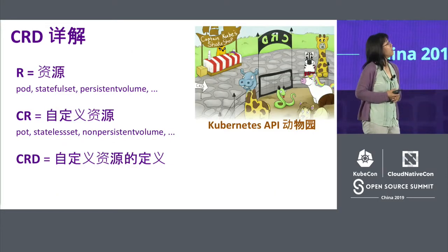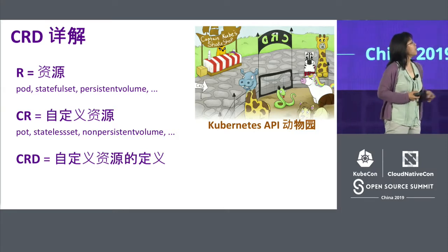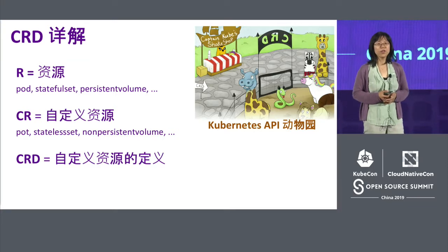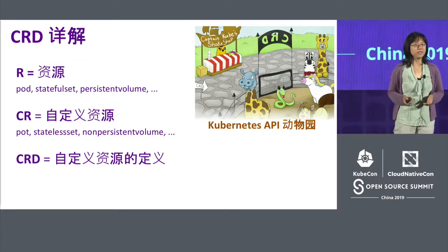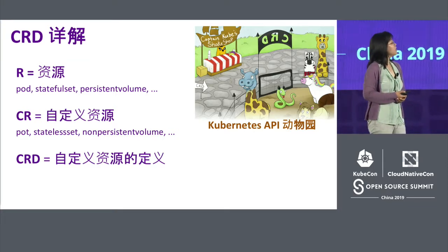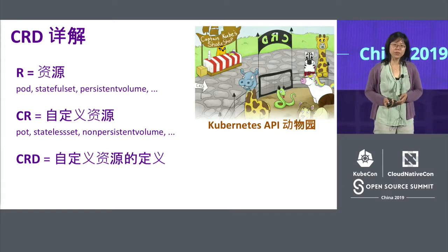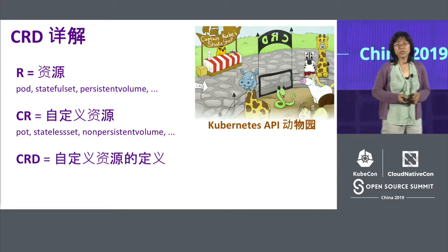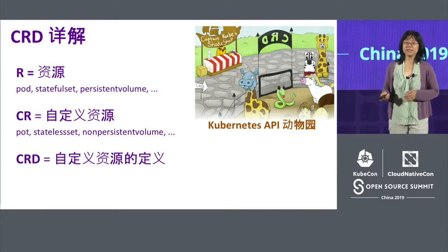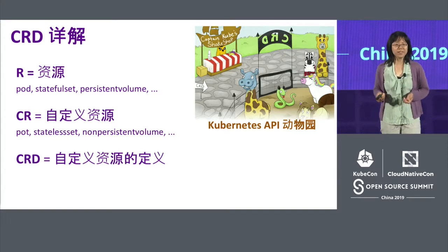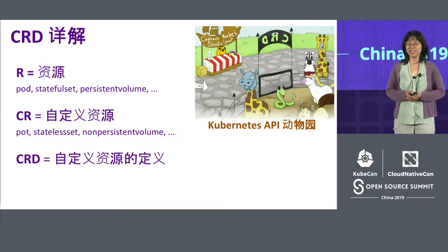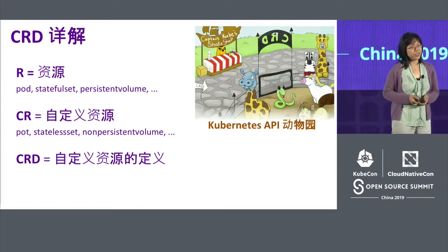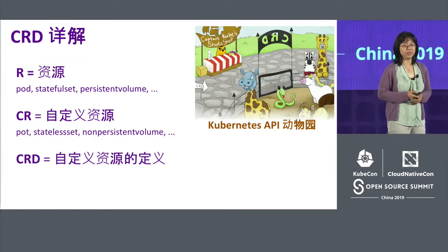So here it is. We call the existing ones API resources — things like pod, replica set, deployment. And if you want to define something new, something on your own, we have custom resources. You can define any way you like — something really weird, like a pod city lab set or a non-processed module. And CRD, Custom Resource Definition, is used to define those custom resources.